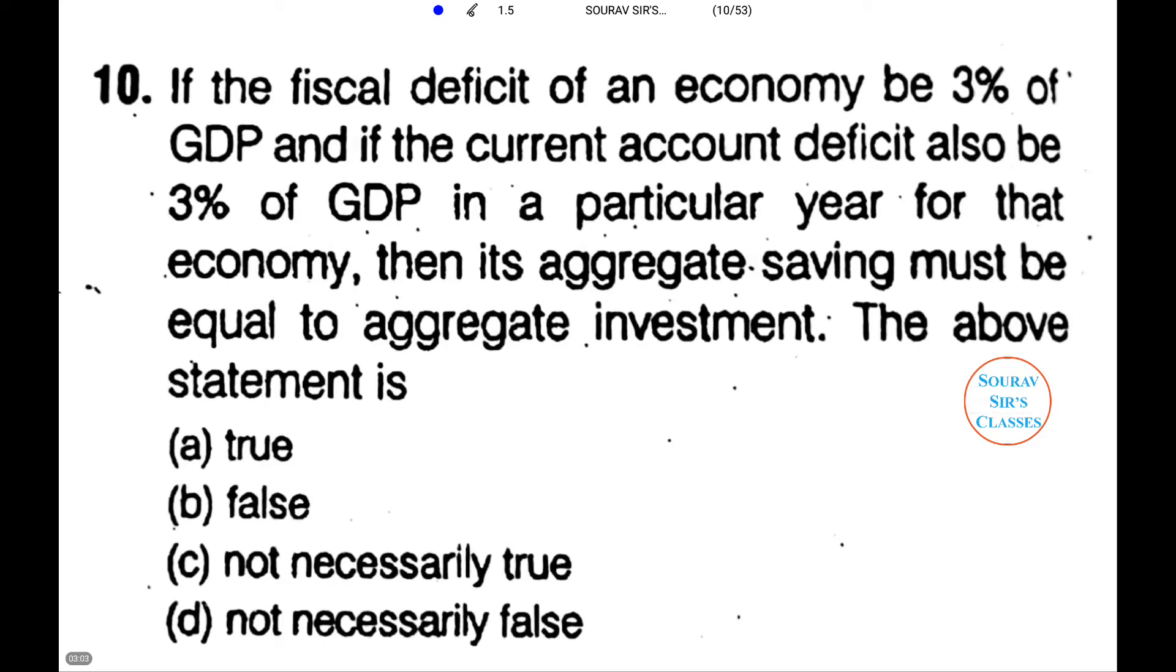Now the next question is marked as question number 10, and this question appeared in the year 2015. Let us first read the question. The question is: if the fiscal deficit of an economy be 3% of GDP and if the current account deficit also be 3% of GDP in a particular year, then its aggregate saving must be equal to aggregate investment. Now we need to comment whether this particular statement is true, false, not necessarily true, or not necessarily false.